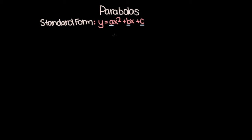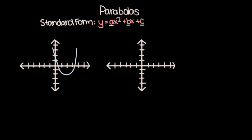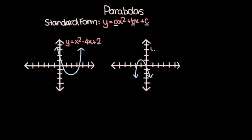As we go through the various characteristics of parabolas, let's refer to these two examples. First, we have the parabola y is equal to x squared minus 4x plus 2. And second, we have the parabola y is equal to negative 2x squared minus 4x minus 1.